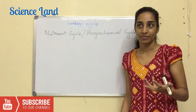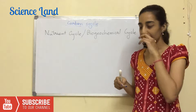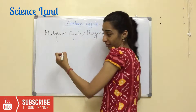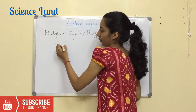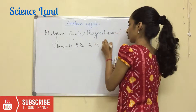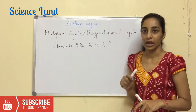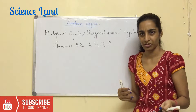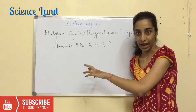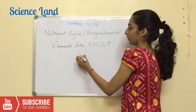The term 'nutrient' refers to something which gives energy or is a basic need of an organism. In terms of elements, the basic ones are carbon, nitrogen, oxygen, and phosphorus. Apart from the carbon cycle, there are many other cycles — nitrogen cycle, oxygen cycle, and phosphorus cycle.